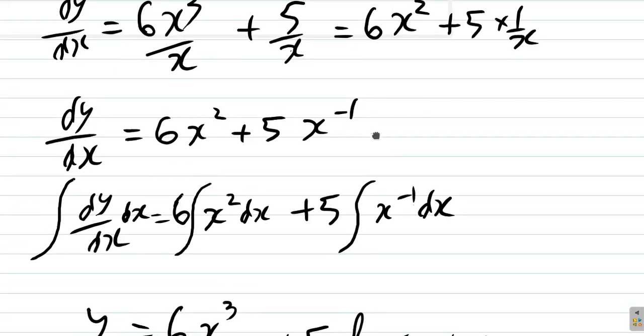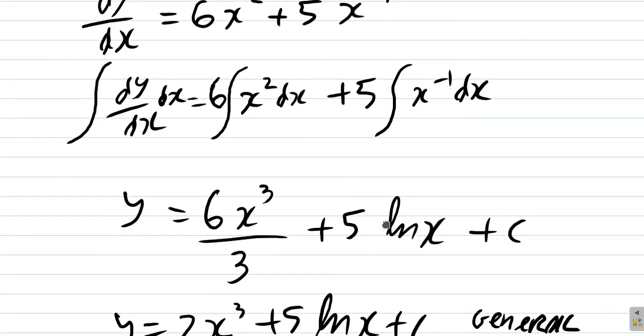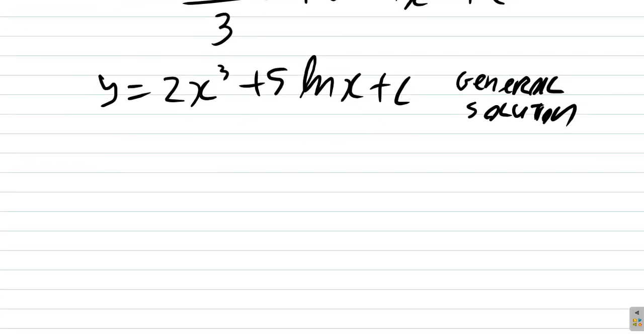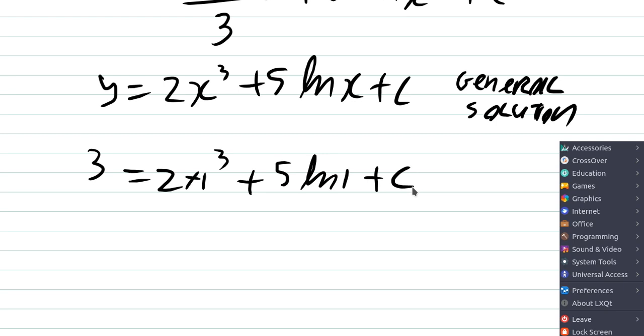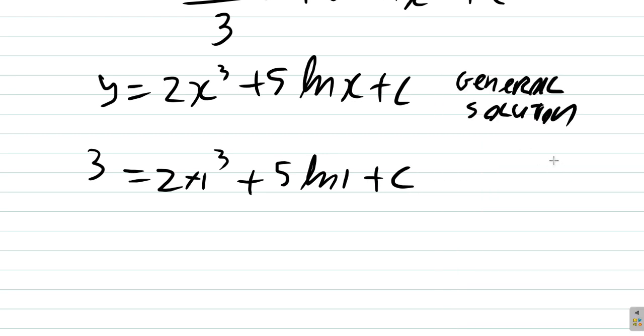We want our particular solution now. We were told that y is 3 when x is 1, so y equals 3 equals 2 times 1³ plus 5 ln(1) plus c. Now what is the natural logarithm of 1?